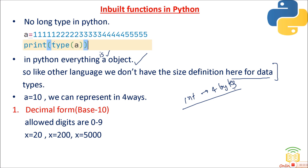In Python, since everything is an object, there's no fixed size allocation like 4 bytes for integers as in Java. It dynamically takes the size needed. Integers in Python are not fixed at 4 bytes — the size depends on the value assigned.